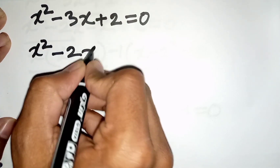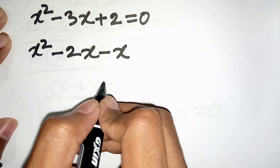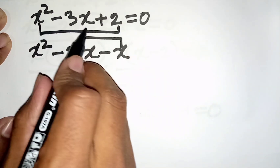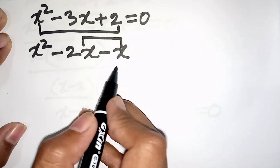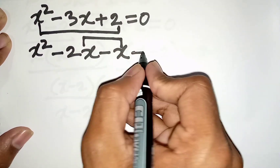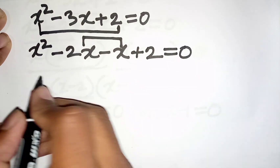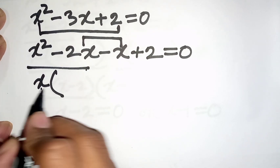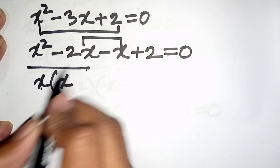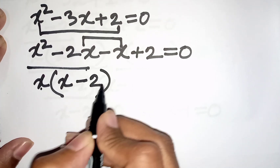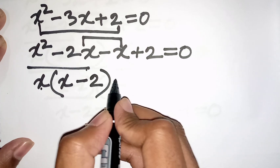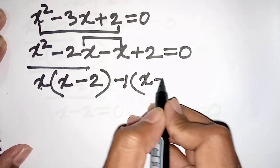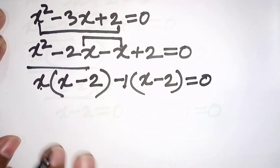We split -3x as -2x - x, since (-2x)(−x) gives the product term and -2x + (-x) = -3x. So x² - 2x - x + 2 = 0. Taking x common from the first two terms: x(x - 2), and taking -1 common from the last two: -1(x - 2), equal to 0.